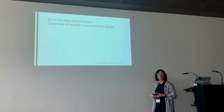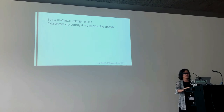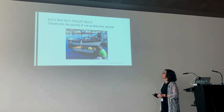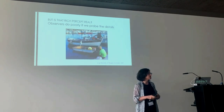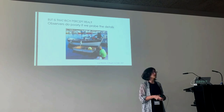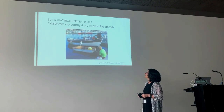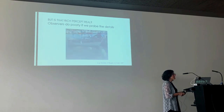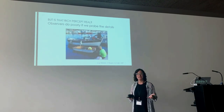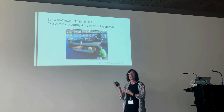However, observers do very poorly when probed experimentally on the details of a scene. One way we do this is using change detection or change blindness experiments. We show two images that are slightly different with a gray screen in between — the gray screen removes any motion transients that would make the change obvious. People tend to be quite bad in this situation, though it depends on the image. This has been interpreted to mean that even though you feel like you've got all the details, you apparently aren't very good at them.